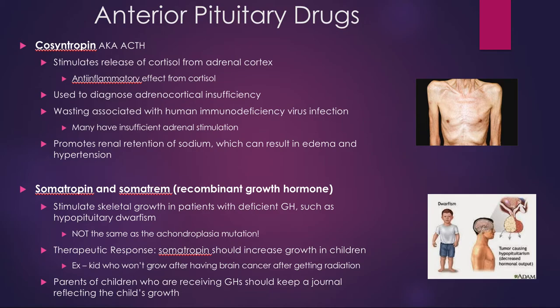Without cosyntropin, your adrenal glands aren't stimulated. We can supplement this in people who don't have this particular hormone. We also use it to determine whether you have adrenal insufficiency — which we know is Addison's disease — if it's from a malfunctioning adrenal gland or from lack of this hormone. If you inject this hormone into a person whose pituitary is not working correctly but adrenal glands are, the adrenal glands will release cortisol in response. If you inject it into somebody whose adrenal glands are not working, they will not. That's how we can figure out whether your Addison's or adrenal malfunction is primary or secondary.